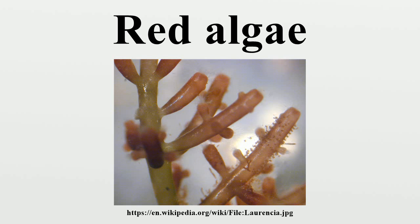A rather different example is Porphyra gardneri. In its deployed phase, a carpospore can germinate to form a filamentous conchocelis stage, which can also self-replicate using monospores. The conchocelis stage eventually produces conchosporangia.